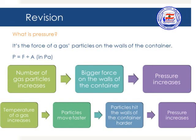To calculate pressure, we divide the force of the gas by the area of the container, and the unit of pressure is the Pascal. If the number of gas particles inside a container increases, we will have a bigger force on the walls and the pressure increases. If the temperature of a gas increases, the particles will move faster, hit the walls harder, and the pressure will also increase.